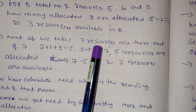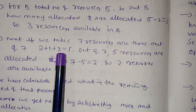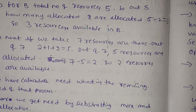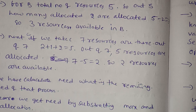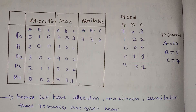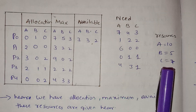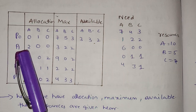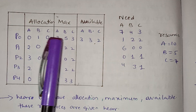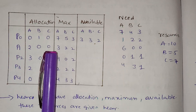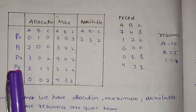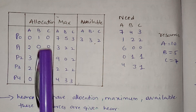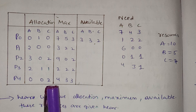For resource C: taking 7 resources total — 2 plus 1 plus 2 equals 5, so out of 7, 5 resources are allocated, and 7 minus 5 equals 2 resources available in C. We have 7 printers: P0 uses 0, P2 uses 2, P3 uses 1, P4 uses 2 — total 5 used.